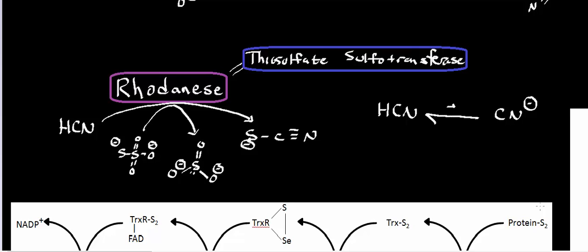Welcome back. What I want to do in this video is go over the function of a really cool enzyme that you very rarely will hear about, and it's called rhodanese. Rhodanese is the common name for this enzyme — notice that the suffix is '-ese,' not '-ase.' In some literature you'll also hear this enzyme referred to as thiosulfate sulfotransferase, and we'll talk about why that is pretty soon.